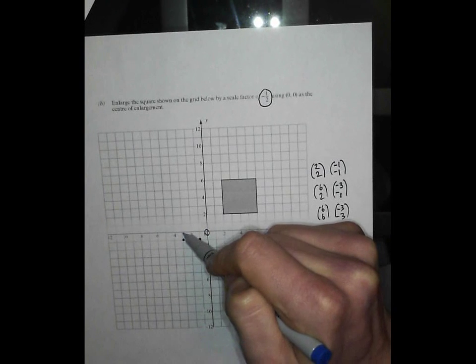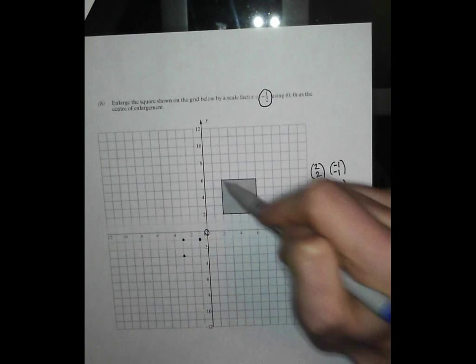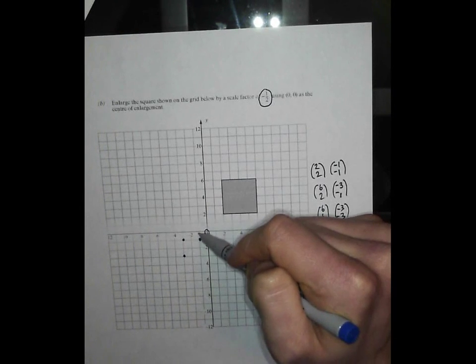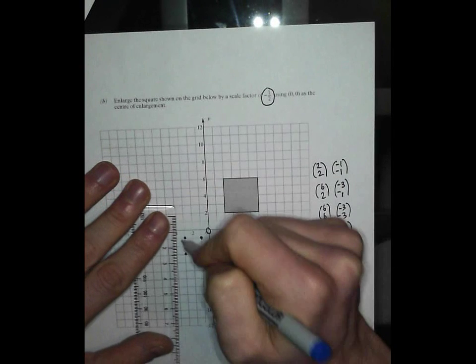This one here. 2 to the right and 6 up. Half would be 1 and 3 if it was a scale factor of half. But it's minus a half, so it's minus 1 and minus 3. So 1 to the left and 3 down. And we end up with a square that looks like this.